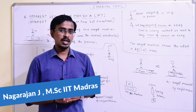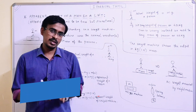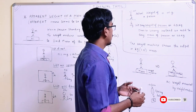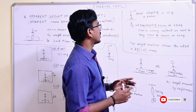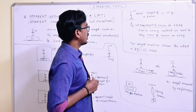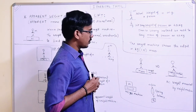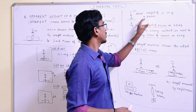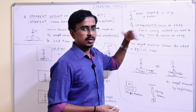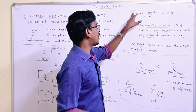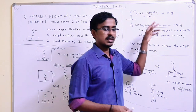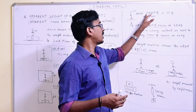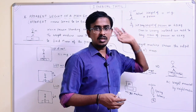First, we will talk about weight, mass and their difference. Now, the actual weight of a person — one person is standing on some ground. What is the actual weight of a person? We will talk about weight, tension and forces. Weight is nothing but M into G, where G is 9.8.